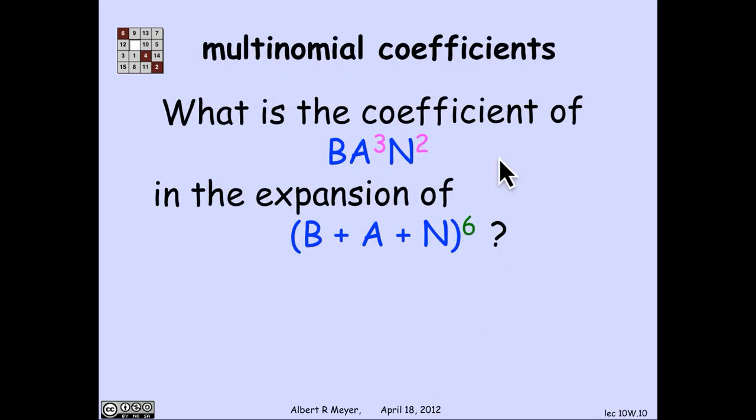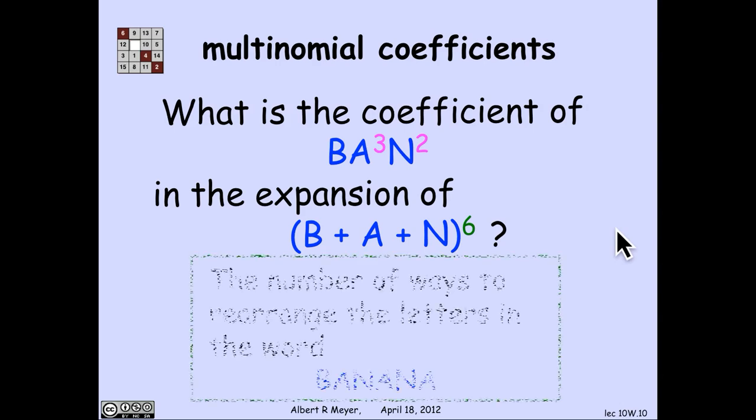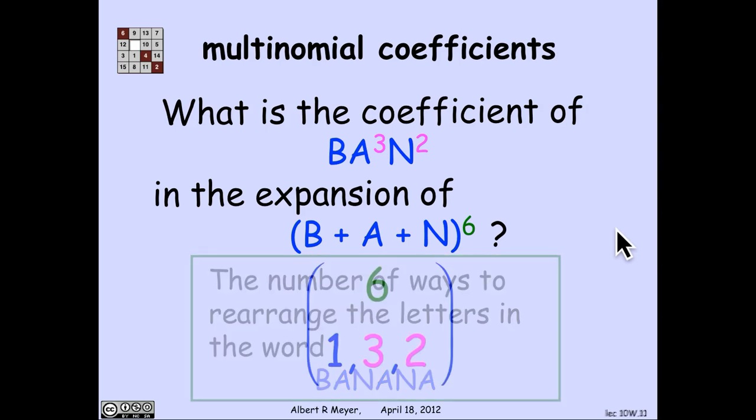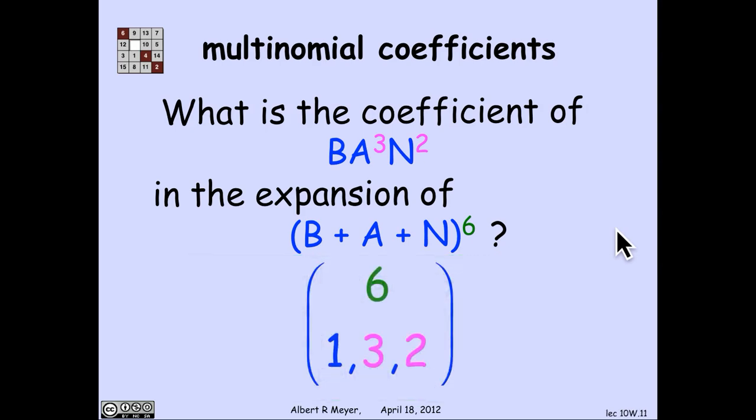Let's do another example. What's the coefficient of b, a cubed, n squared if I expand this trinomial b plus a plus n to the sixth power? Now I have three to the sixth terms. How many of them involve a b, three a's, and two n's? By the bookkeeper rule, it's the number of ways of rearranging the letters in the word banana. And by the bookkeeper rule, that's six with subscripts one, three, and two.